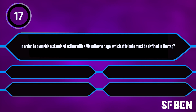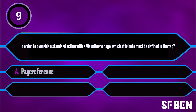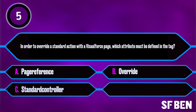In order to override a standard action with a Visualforce page, which attribute must be defined in the tag? Is the correct answer A: page reference, B: override, C: standard controller, or D: controller?